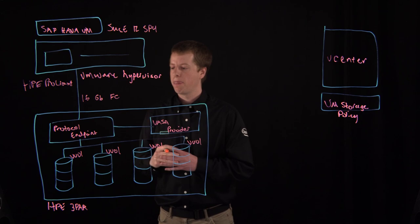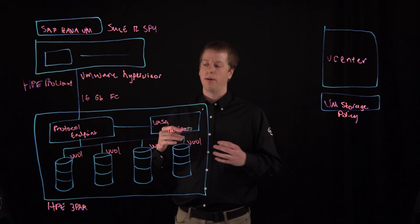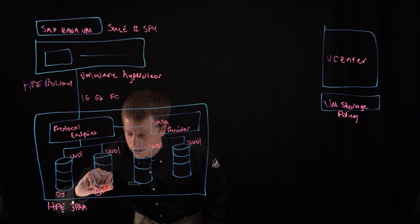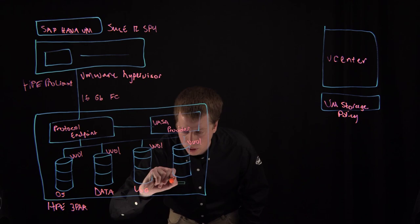There are four different vVols that were configured with the SAP HANA VM, and those were four different virtual disks. The first vVol was assigned to the OS files, the second to the HANA data files, the third to the HANA log files, and the fourth to the HANA shared files.